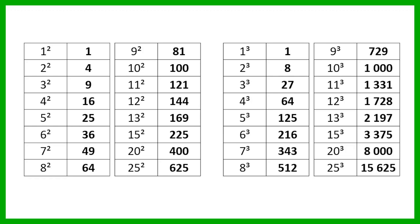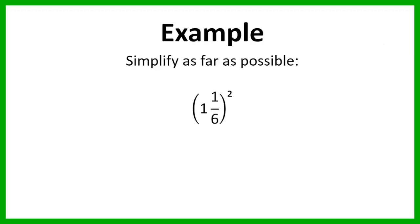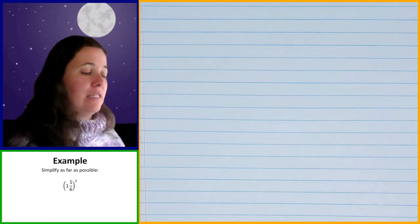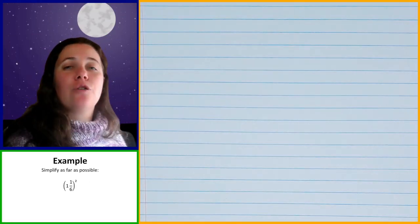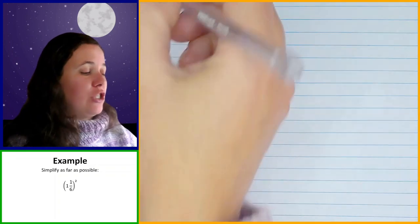Now we're going to do some examples where we're going to be finding the squares, cubes and roots of common fractions. The first example we're going to look at is this one over here. We have to simplify this as far as possible. You've got 1 and 1 sixth squared. So what we're going to do when we have a question like this — the very first thing we need to do is convert this mixed number into an improper fraction.